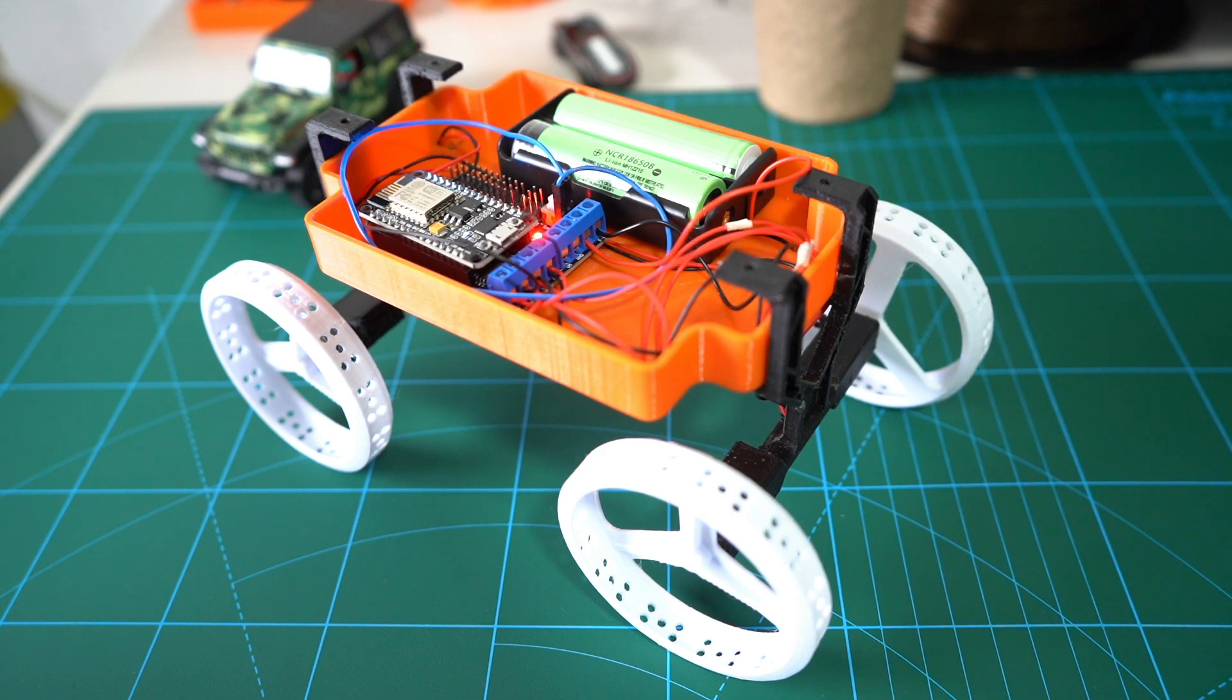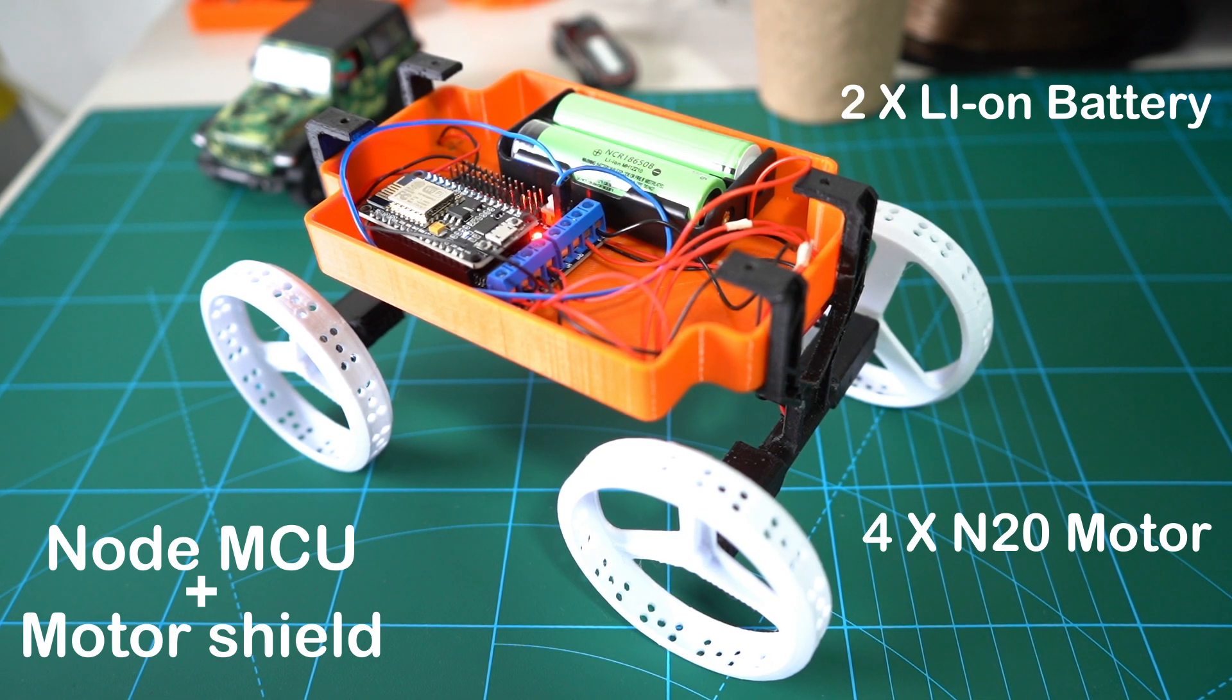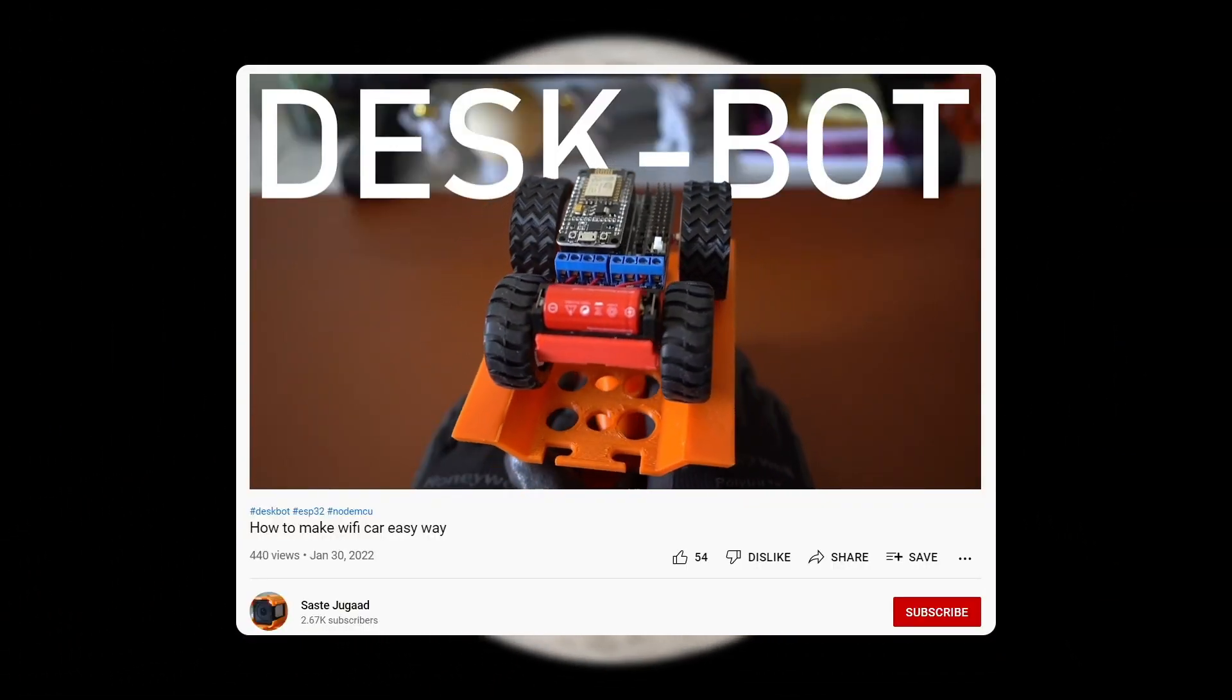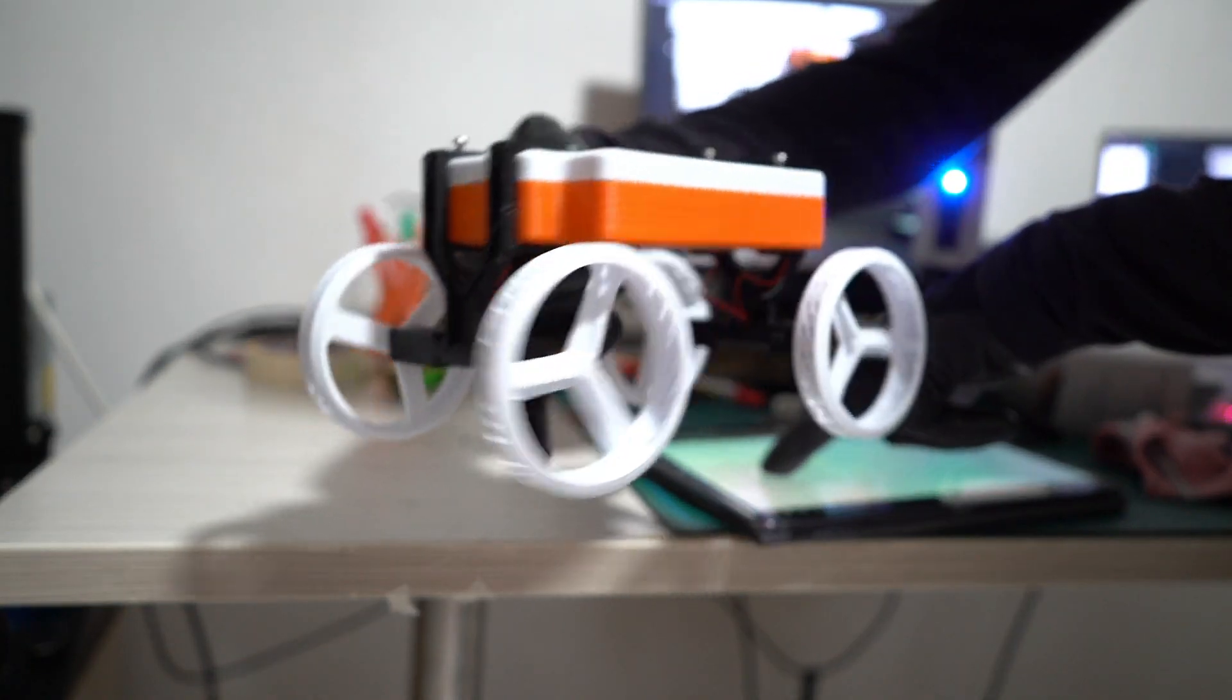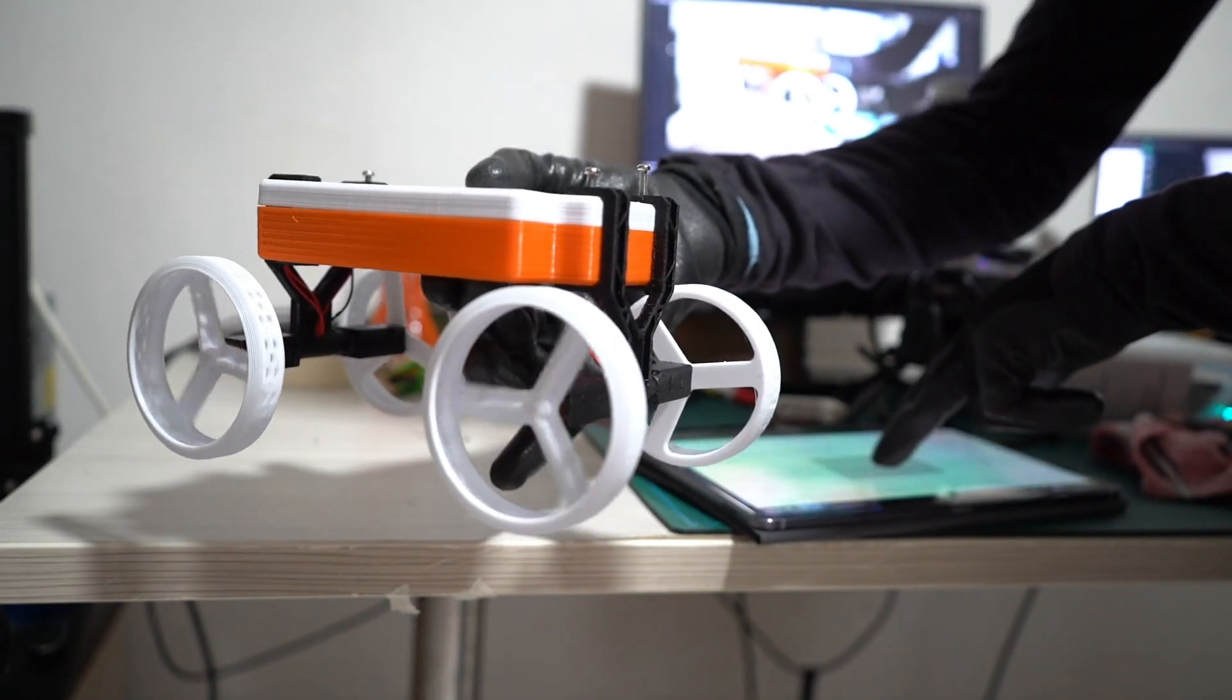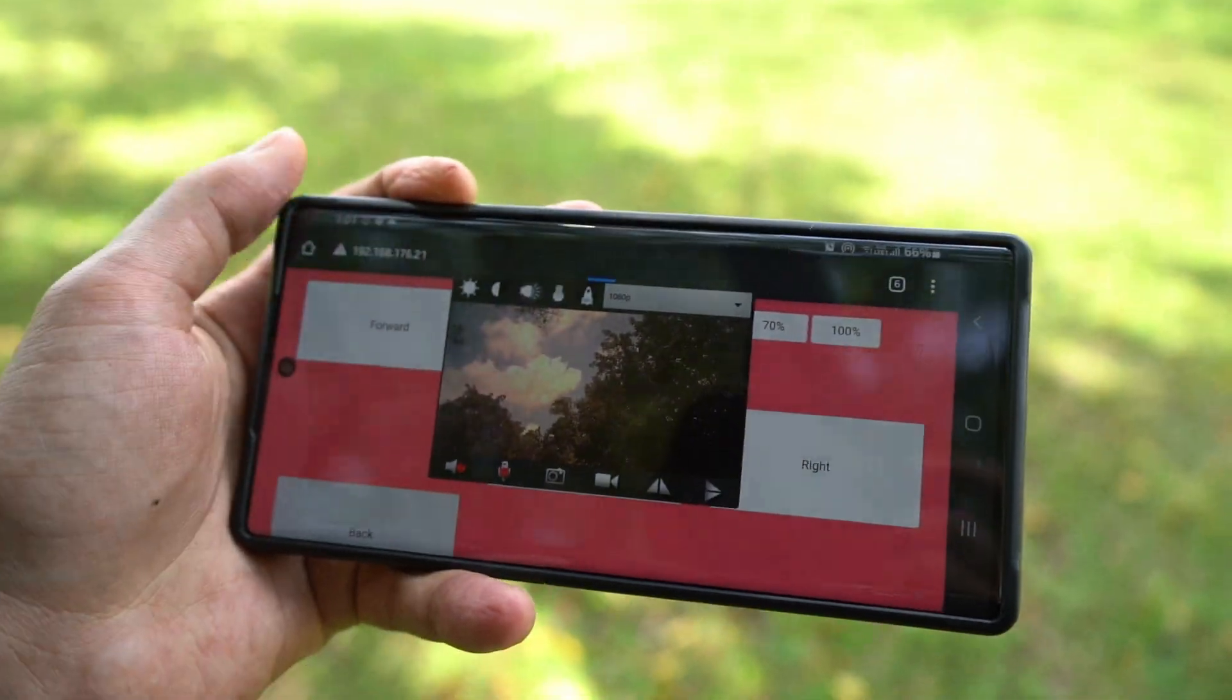The electronics layout is quite similar to the original cube rover. There are 4 DC motors for movement and NodeMCU with motor driver shield for avionics. And for power, we are using 2 lithium-ion batteries. This setup is similar to our last project. We need a Wi-Fi hotspot which will connect our rover, and then we enter the rover's IP address in our browser and we will get an interface which will be able to control the rover.